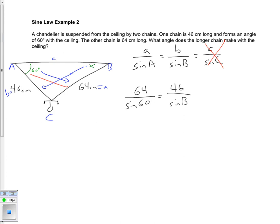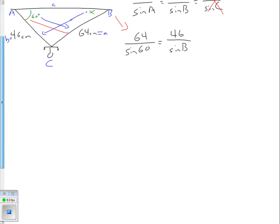What's really key here is that we have one complete ratio - we have 64 divided by sin 60. That means we have a value for both the numerator and the denominator, so we can use that as our key to solve. Just like we've done in the past, we're going to use cross multiplication.